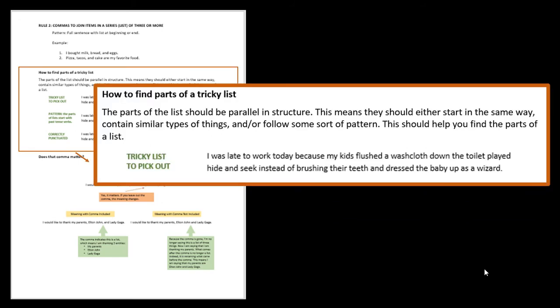So when you're writing or you're editing someone's essay and you're trying to decide where do I put these commas in the list, it can be kind of tricky because lists can get pretty long. The parts of the list are going to help you figure out where they stop and start because if it's a good list, it should be parallel and structure, meaning that the parts of the list should either start in the same way, contain similar types of things, and or follow some pattern. This pattern is important and that should help you find the parts of the list. So I have this tricky list for us to work on. I was late to work today because my kids flushed a washcloth down the toilet, played hide and seek instead of brushing their teeth, and dressed the baby up as a wizard.